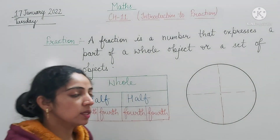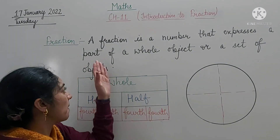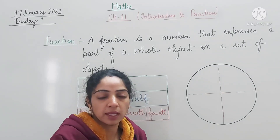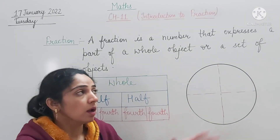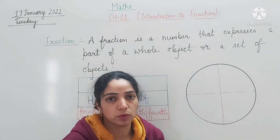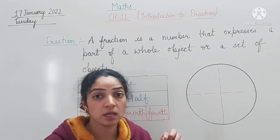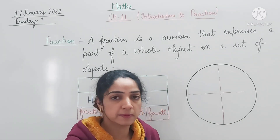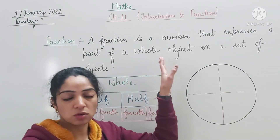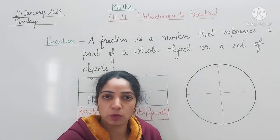So what is a fraction? It is a number that expresses a part of a whole object, or it may be a set of objects also. Whole is not only one object — whole may be a set of objects as well.